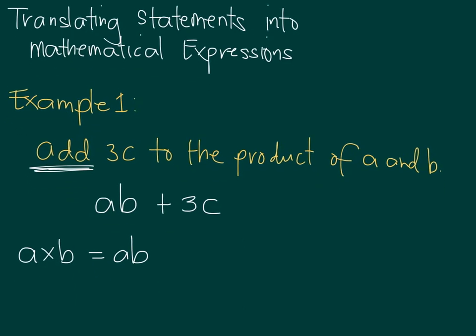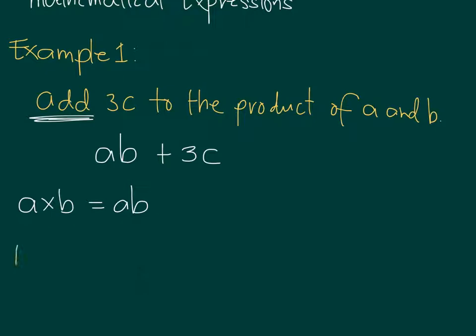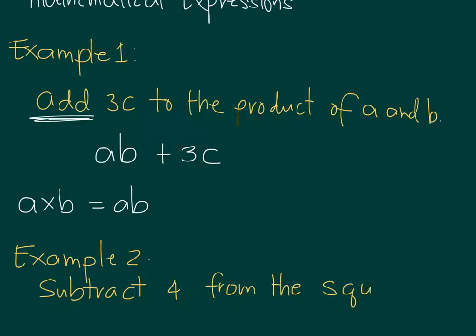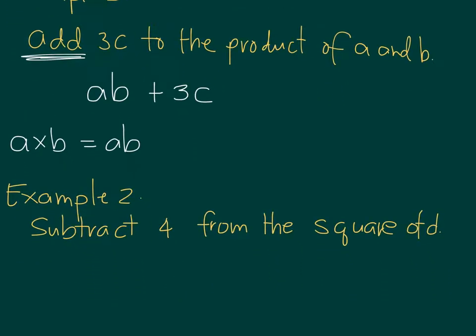Let's look at another example. Example 2: The statement is subtract 4 from the square of the letter D. So we want to subtract 4, so there's a subtraction or minus sign for 4. And then we are subtracting it from the square of D.